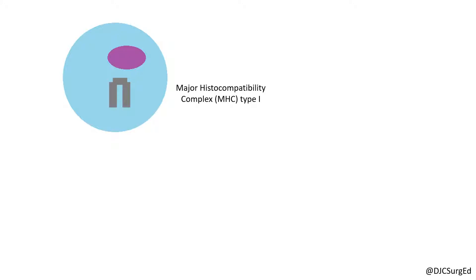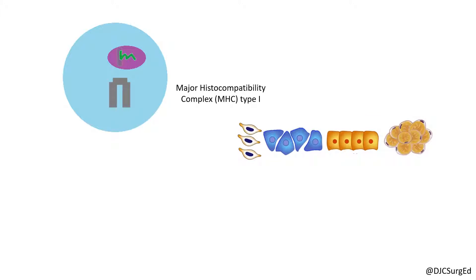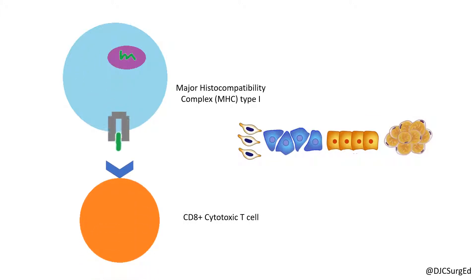The major histocompatibility complex is a set of proteins on the cell surface that assists in the recognition of foreign antigens. MHC class 1 occurs on all nucleated cells and presents antigens to cytotoxic T lymphocytes that express the CD8 receptor, triggering the cell to undergo apoptosis.